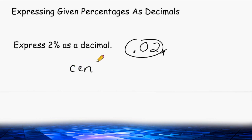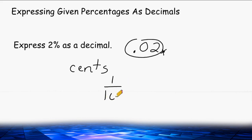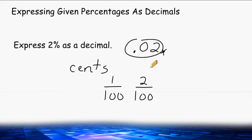Another way to think about percentages is in terms of dollars and cents. If you were asked to write two cents, you would write it as 0.02, because a cent is one unit out of 100. So two cents, or two percent, is two out of 100 — we write the 2 in the hundredths place.